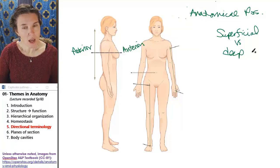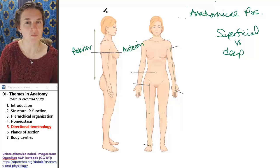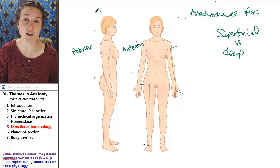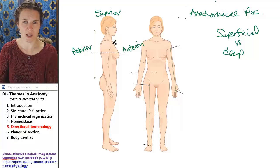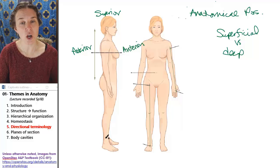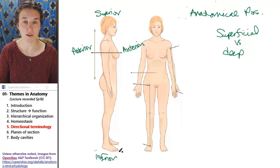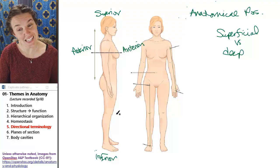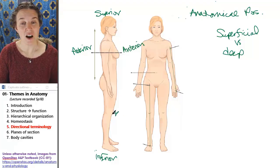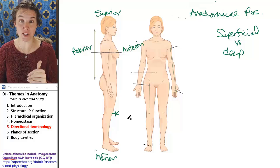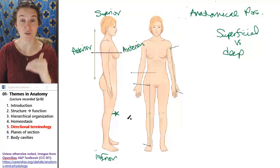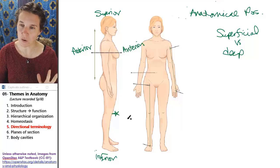In standard anatomical position, the head is always superior to anything below it — all the way down to the toes. The toes are inferior to the head. The knees are superior to the toes but inferior to the head. It's all relative.